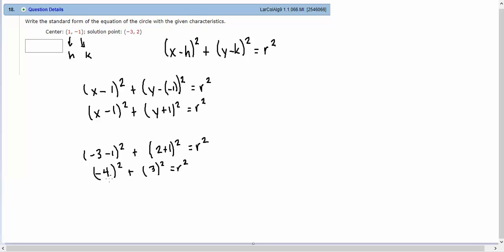So negative 4, when you square it, becomes positive 16. 3 squared is 9, equals r squared. So we find out that 25 is r squared.